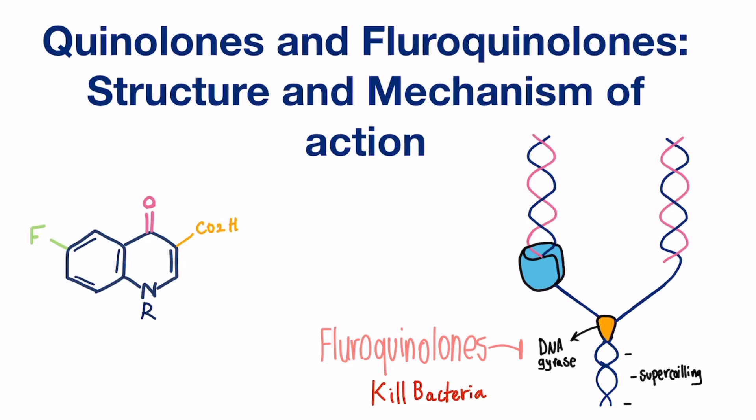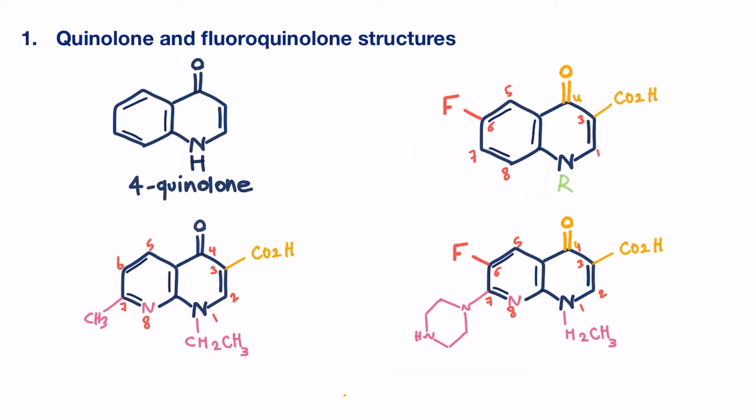Let's begin with the structure. Quinolones are heterocycles with a bicyclic core structure, known as 4-quinolone. The first successful agent in this class to be synthesized was nalidixic acid. The carbonyl group at position number 4 was found to be essential for the activity of the quinolones. Thus, all of these drugs must contain it.